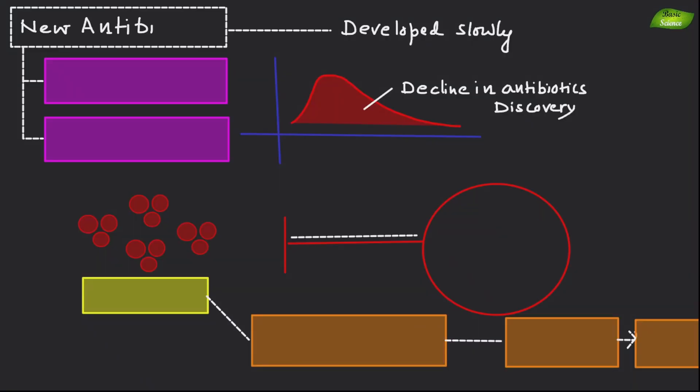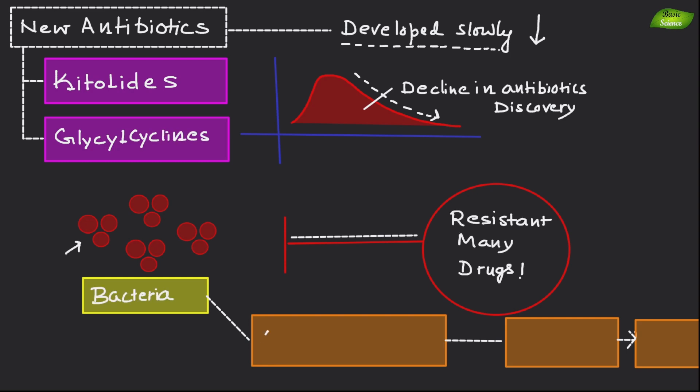Recently, new antibiotics have been developed more slowly. But new types like ketolids and glycylcyclins have been introduced. However, bacteria have become more resistant to many drugs. This means antibiotics are not a perfect solution for all infections. Doctors must use their experience to choose the right treatment and adjust according to the lab test.